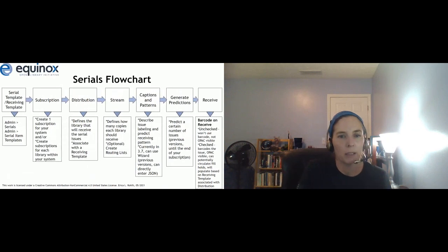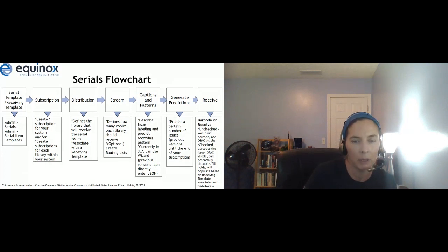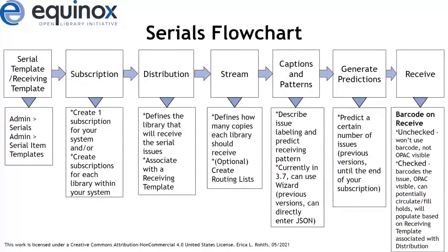Here is the basic serials flowchart that you need to keep in mind. These are the basic steps that you'll need to perform. You'll first need to create a serials template, also referred to as a receiving template. In previous versions, there was a more systematic way of creating the subscription, creating the distribution, and then creating the stream. Now in later versions, the subscription, distribution, and the stream are pretty much bundled into the same interface.